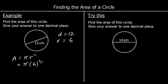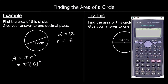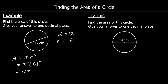We've given our answer to one decimal place, so we'll type this into the calculator — pi, which is shift and then the standard form button on this calculator, times 6 squared. So I've got 36 pi, or if I press the SD button to one decimal place, I've got 113.1 centimetres squared.